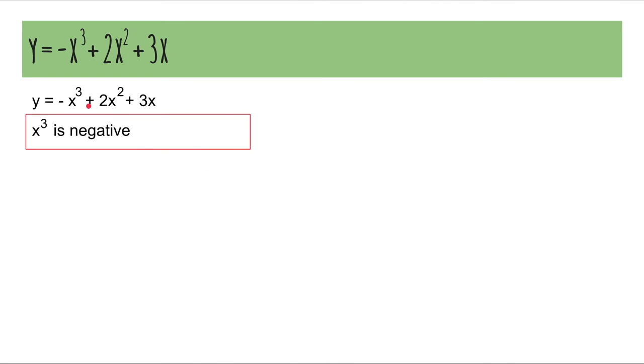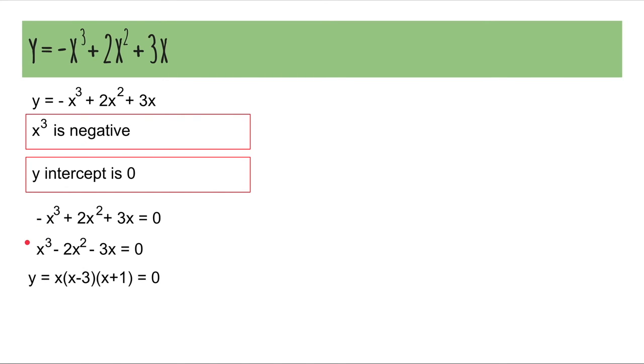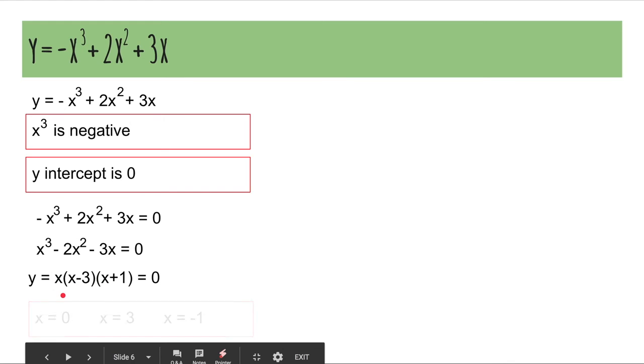So, the x cubed term is negative in this one. The y-intercept is 0, and this is what you're trying to solve for the x values. Now, if I was solving this, I would times everything by negative 1 to make the x cubed term positive because then it's easier to factorize. And then you have the same factors as the previous question and, therefore, the same solutions as the previous question.